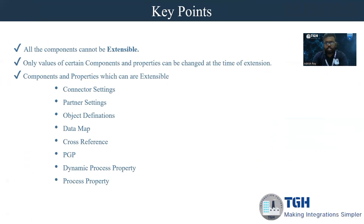There are some key points which we have to remember before extending a Boomi process. All the components cannot be extensible. Only values of certain components and properties can be changed at the time of extensions. Components and properties which can be extensible are: connection settings, partner settings, object definitions, data map, cross reference, PGP encryptions, dynamic process property, and process property.